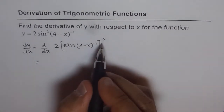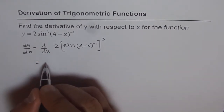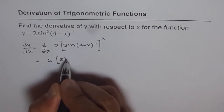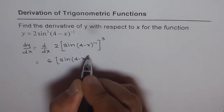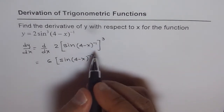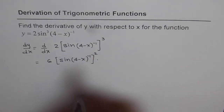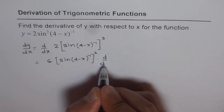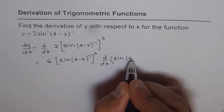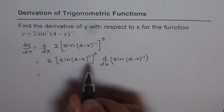Now let us find this derivative using the power rule. So we get 3 times 2, which is 6. We get 6 times sin of 4 minus x to the power of minus 1, raised to the power of 2 — that is 1 less than 3. So we get 6 times the d/dx of the inside function, which is sin of 4 minus x to the power of minus 1.